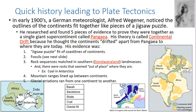His fourth piece of evidence was that mountain ranges lined up between the continents. You have the Appalachian Mountains in North America matching with the Atlas Mountains in Africa, and they also extend up into Greenland and over into Europe. He found that these were the same mountains, just split by the oceans — it made sense that the mountains were formed when those landmasses were together.